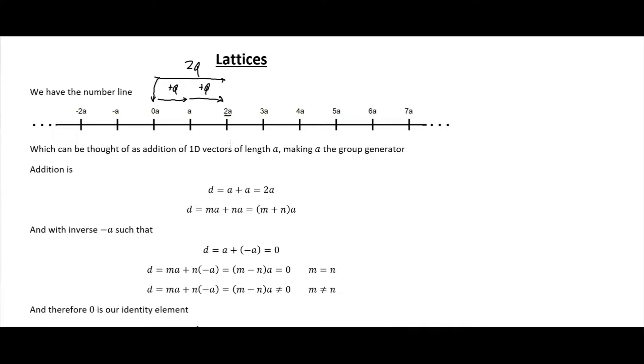It's a 1D vector of length a. Therefore a is the group generator where we can define any point on this as na where n is an integer, going from 0 to plus or minus 1 to plus or minus 2 and so on. Addition is as I said, so d for distance: a plus a equals 2a, and more generally ma plus na is just equal to (m+n) times a.